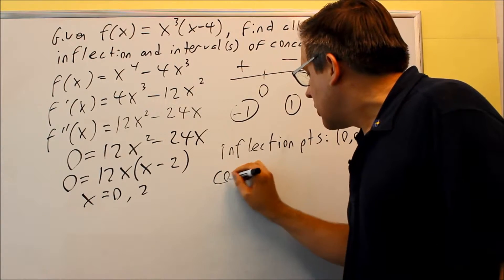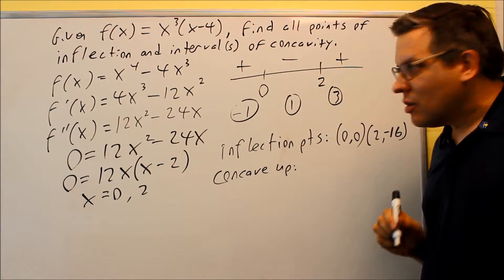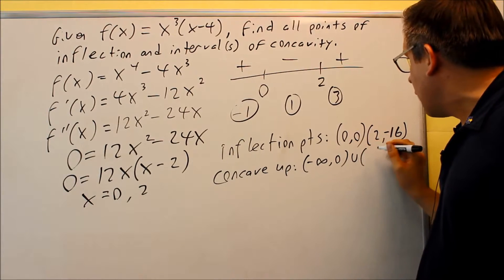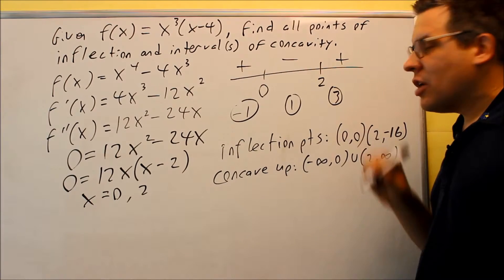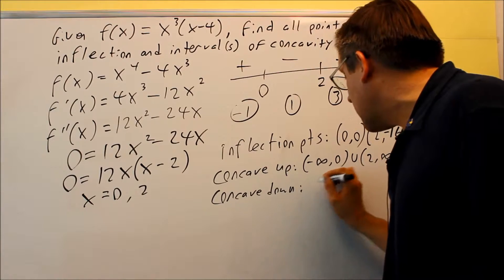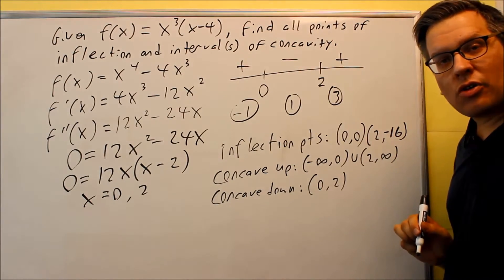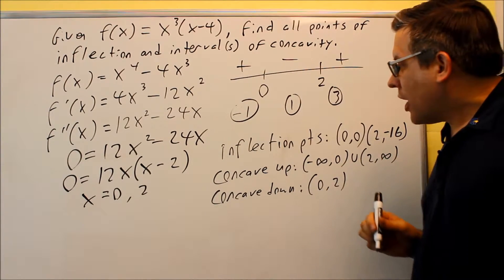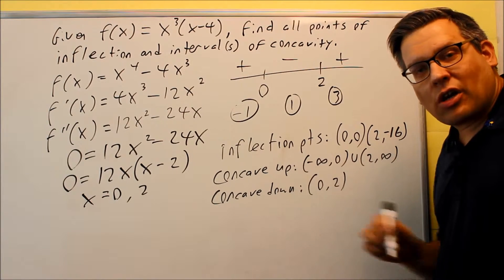Now we also have to look for concave up and concave down intervals. Concave up is where you see plus signs: that's going to be from negative infinity to 0, and also from 2 to infinity. Concave down occurs wherever you have a negative, which is between 0 and 2. So concave up is always where you see plus signs, and concave down is where you have a minus.